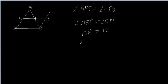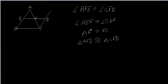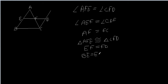From these conditions we can say that triangle AFE is congruent to triangle CFD by AAS. Now since these two triangles are congruent, we can say that EF is equal to FD. Also, DE is equal to EA because E is the midpoint of AB, and both of these are equal to DC because of the two triangles being congruent.